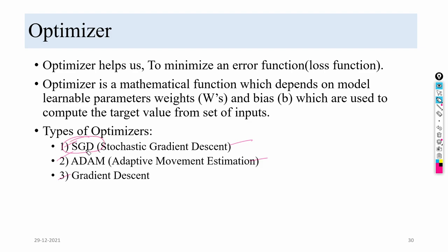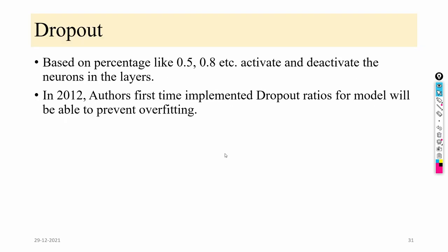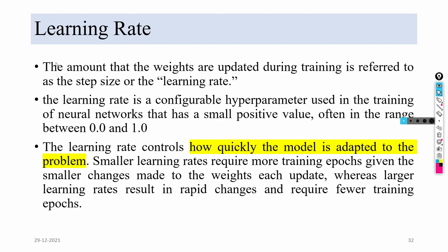Dropout, based on a percentage like 0.5 or 0.8, activates some neurons and deactivates others in layers. In 2012, the AlexNet authors first implemented dropout to prevent overfitting — this is one of the novelties of the AlexNet model.